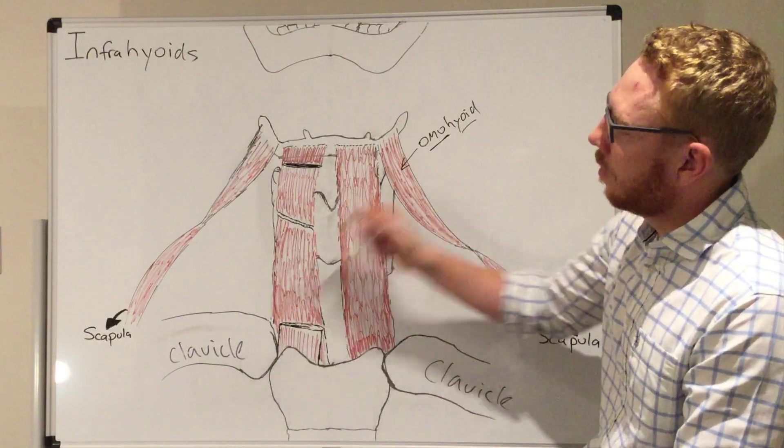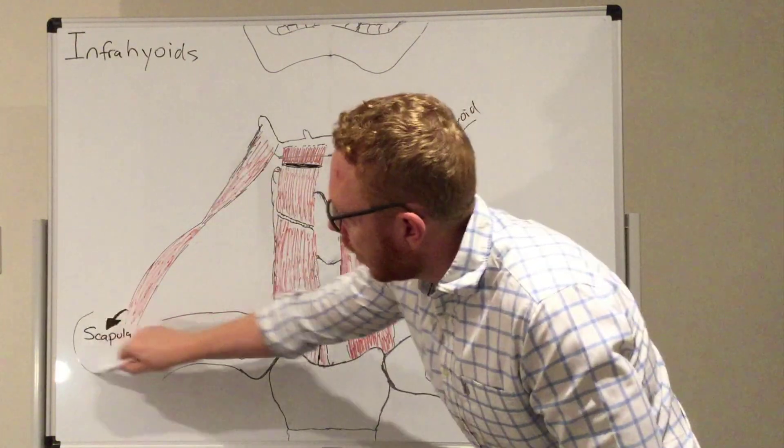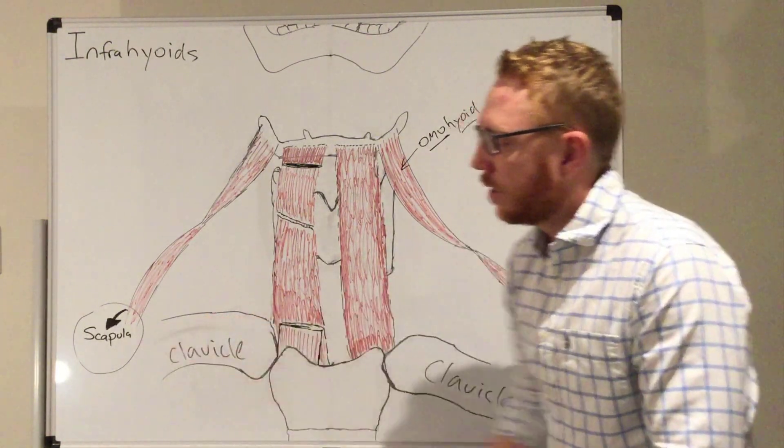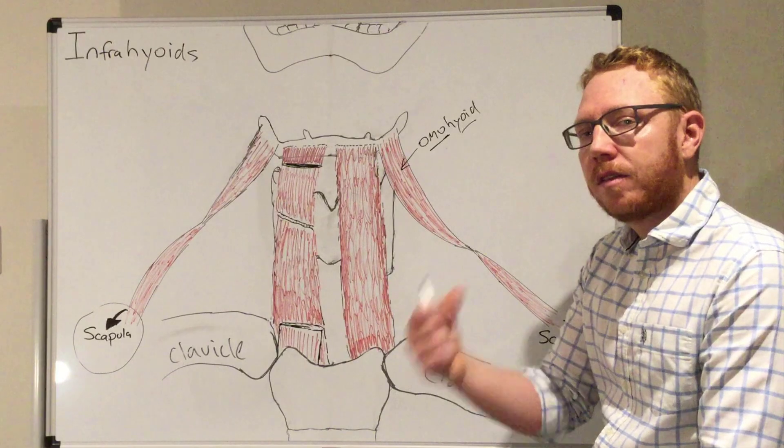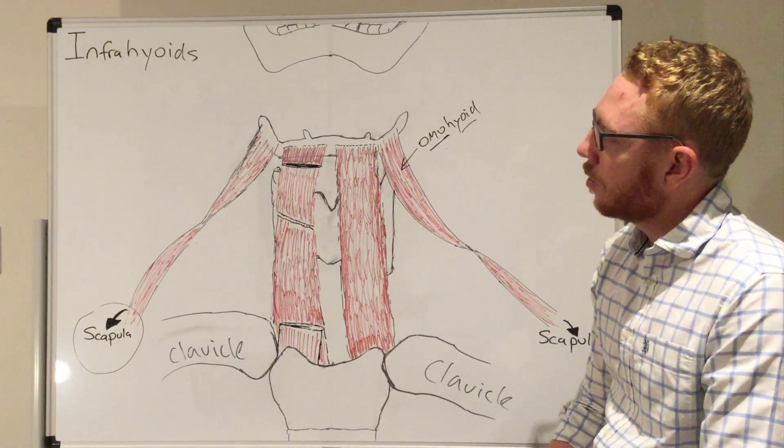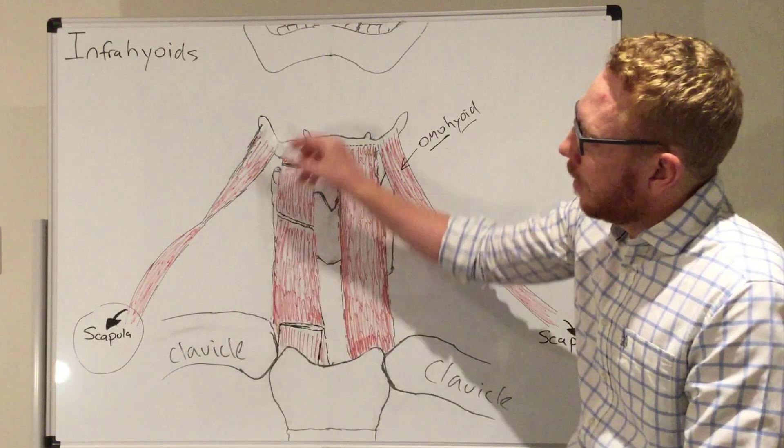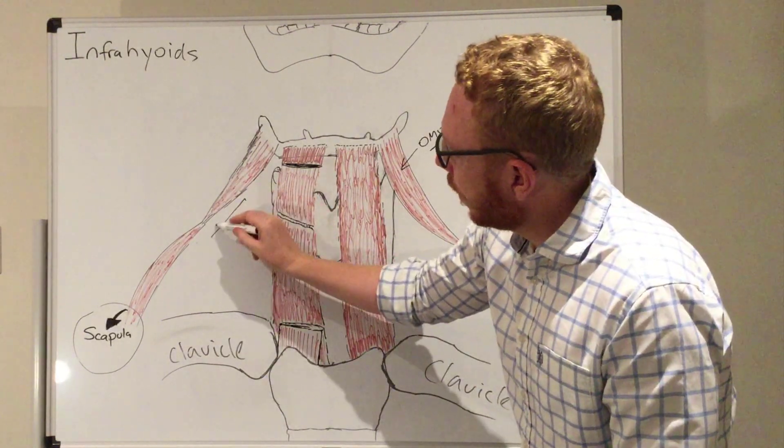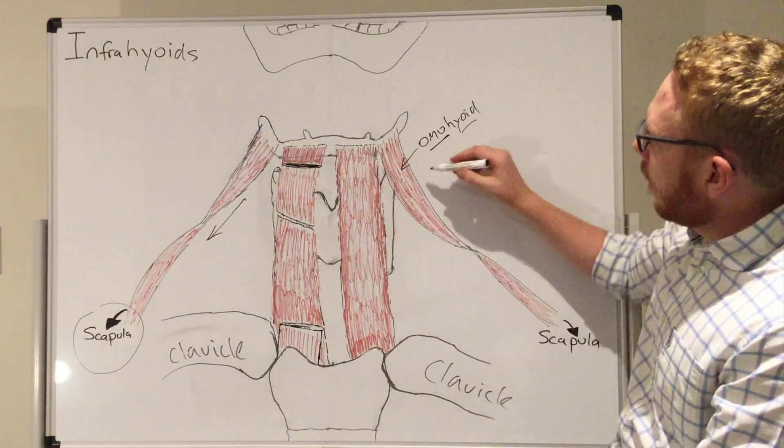This omohyoid muscle, as you can see over here on this one because you can see it easier, is attached down at the scapular level. That's why it's called the shoulder. It's attached to the superior border of the scapula near the notch, the scapular notch, the superior notch there, and it attaches down like so. It's essentially drawing the hyoid in that direction.